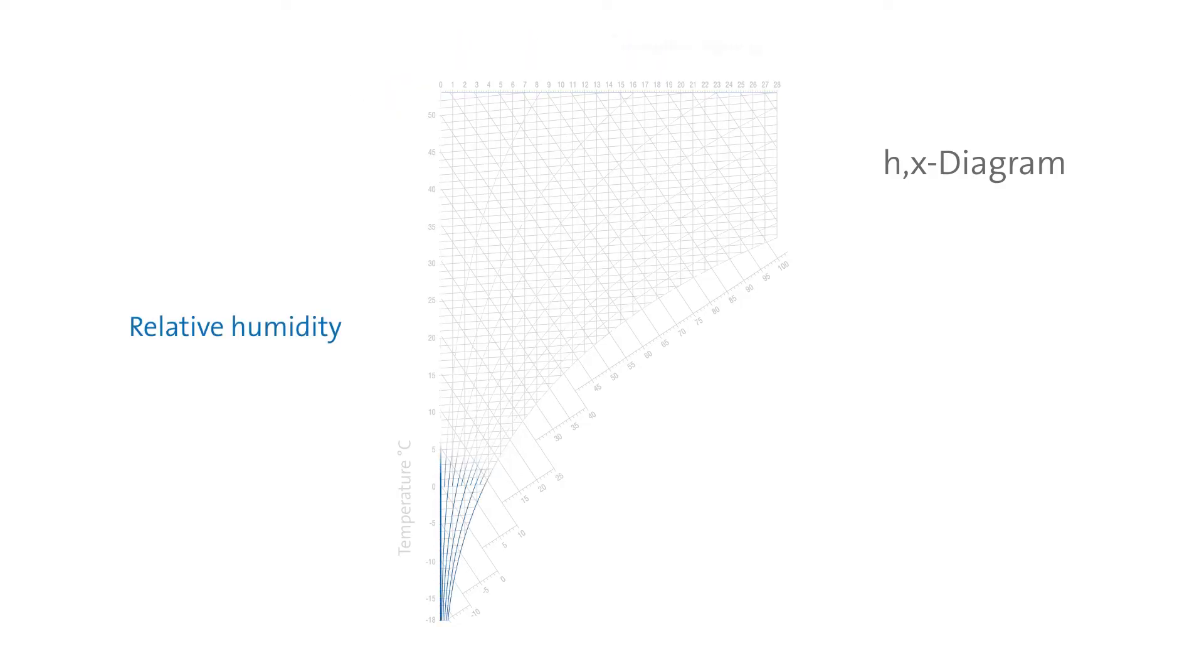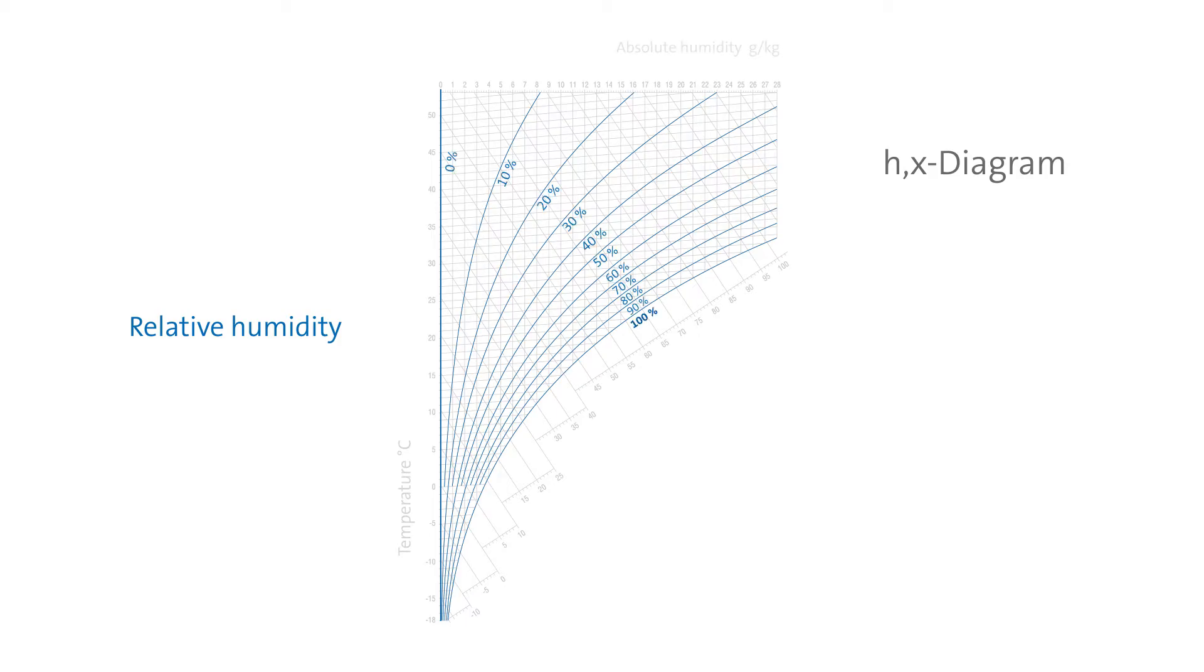The curved lines describe relative humidity as a percentage. The scale ranges from 0% relative humidity up to the so-called saturation line of 100% relative humidity. Above this line, air can no longer absorb more humidity and condensation begins to form.